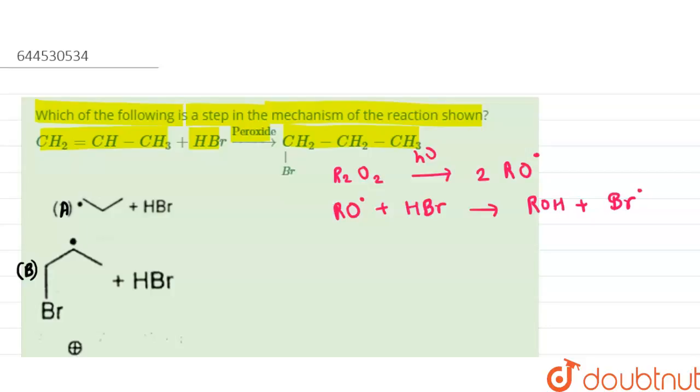Now let us consider the reaction propagation steps. In that case, our alkene CH2 double bond CH-CH3 will react with Br radical to form...